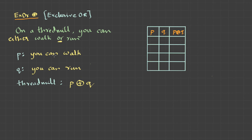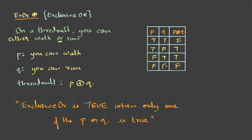This statement will be true only when either this or this is true — that's the second and third cases: true-false or false-true. In these two cases it will be true. If both are false, the statement is false. And when both are true, still it is false — you can't do both at a time. We memorize this as: exclusive OR is true when only one of P or Q is true.